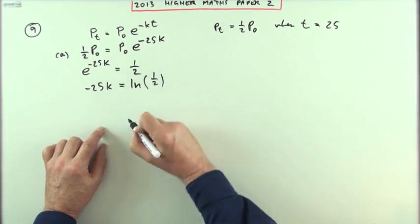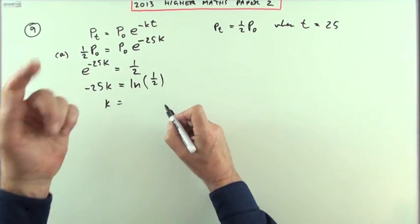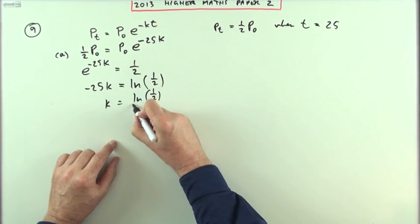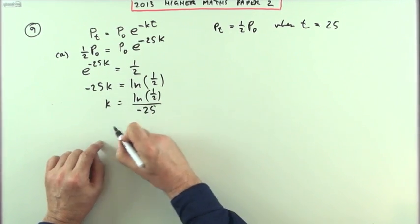So that's ln of a half. And then finally, to get k, divide by that negative 25. Ln of a half divided by negative 25.